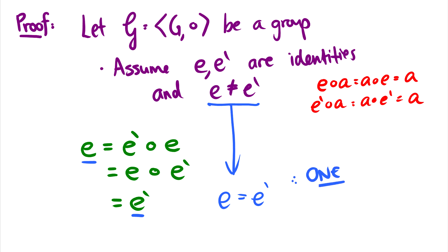So any group will have exactly one identity and no more. And we've proven this generally. So this wasn't proven for some specific group. This was proven for anything.